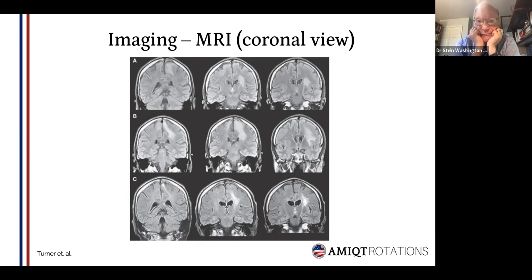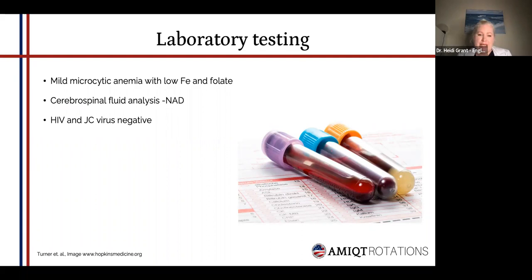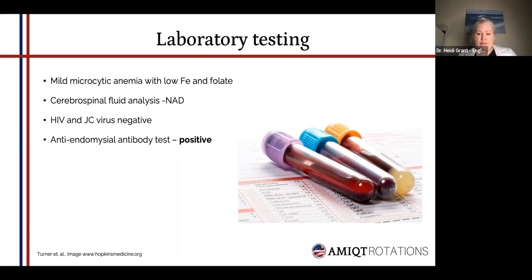Laboratory testing was also done. They found mild microcytic anemia with low iron and folate — so we're seeing malabsorption. CSF fluid analysis from lumbar puncture was negative. HIV and JC virus testing was also found to be negative, ruling out a couple of other major differentials. Because of the mild microcytic anemia and malabsorption, an anti-endomysial antibody test was done and came back positive.